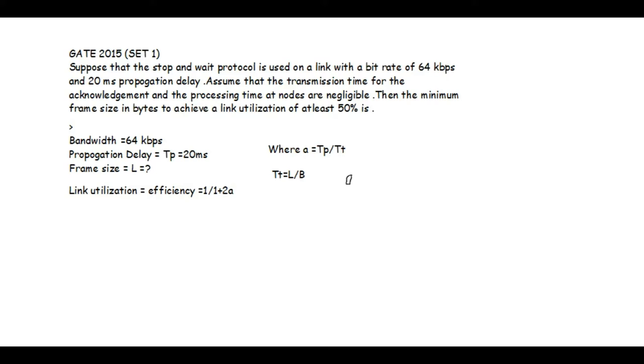So a will become a equals to 20 into 10 to the power minus 3, which is 20 millisecond. I am converting this millisecond into a second. Therefore, I am writing 20 into 10 to the power minus 3 upon L. L is the frame size and bandwidth is 64 kbps. So I am writing 64 into 10 to the power 3 bits. And after solving this, I am getting 1280 bits upon L. So let's put all this information into a formula.